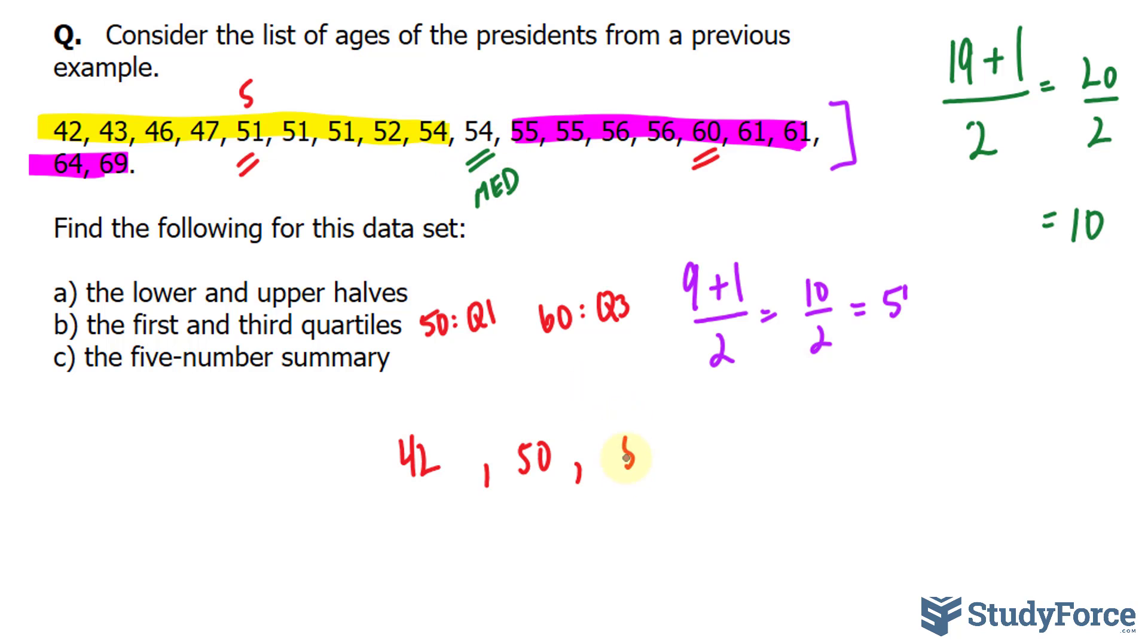The midway point, or the median, is 54, then 60, and then the largest value being 69.